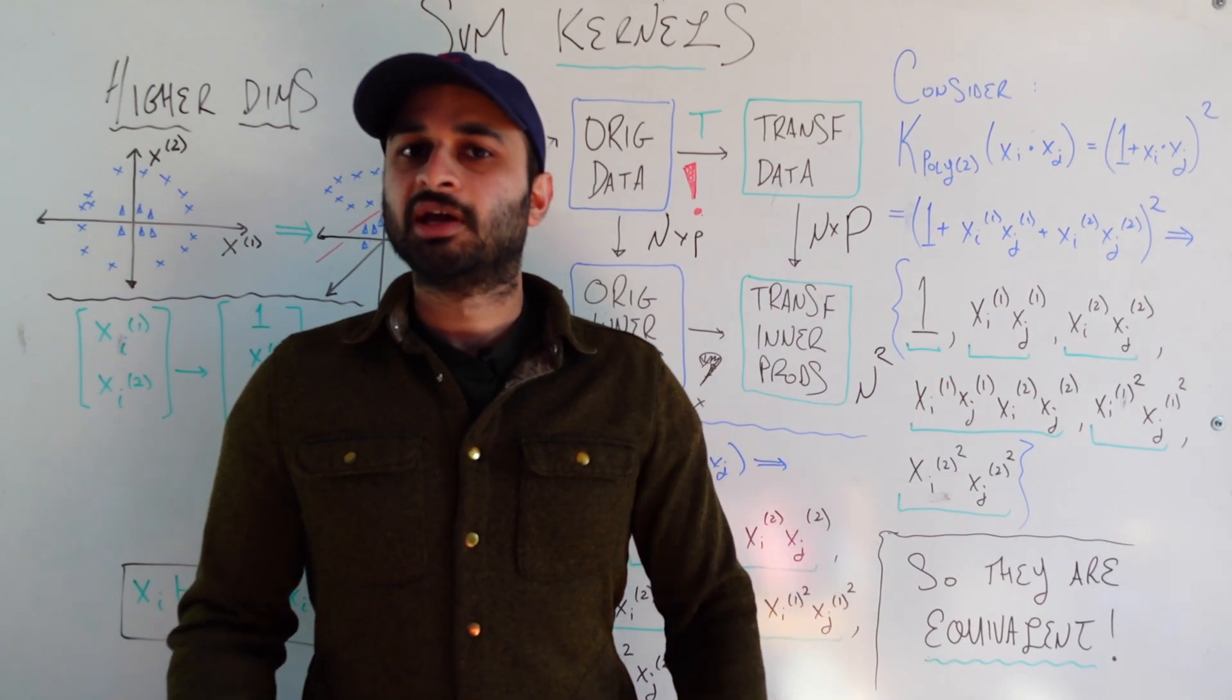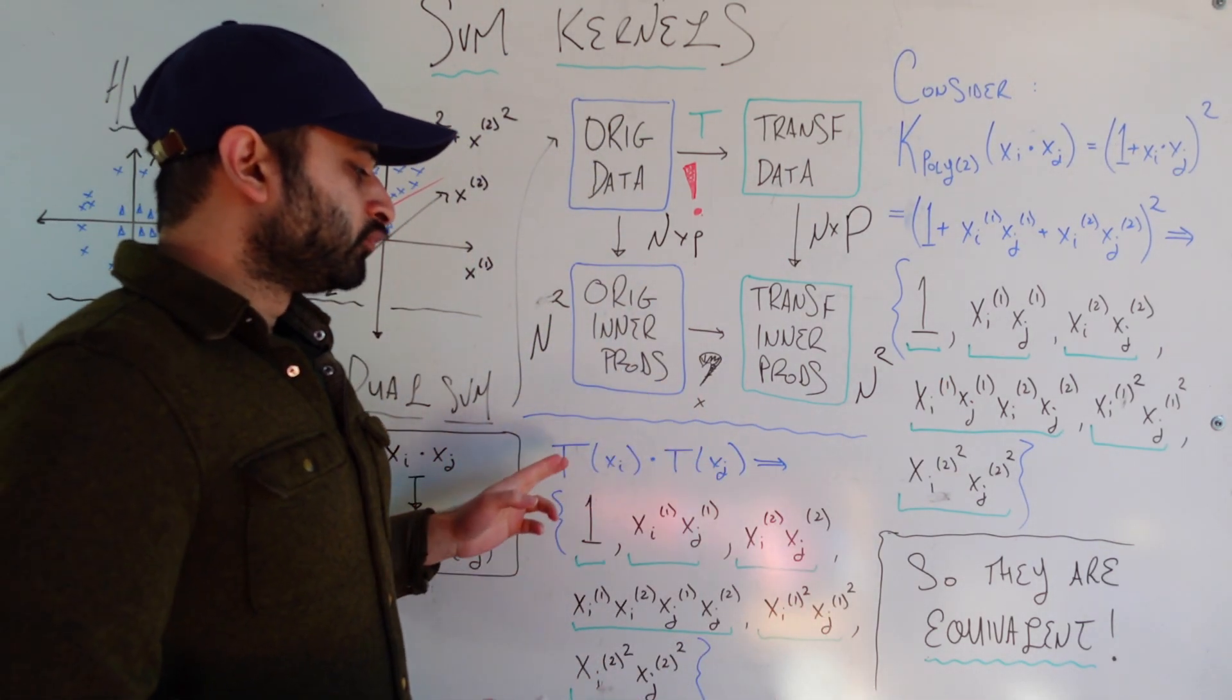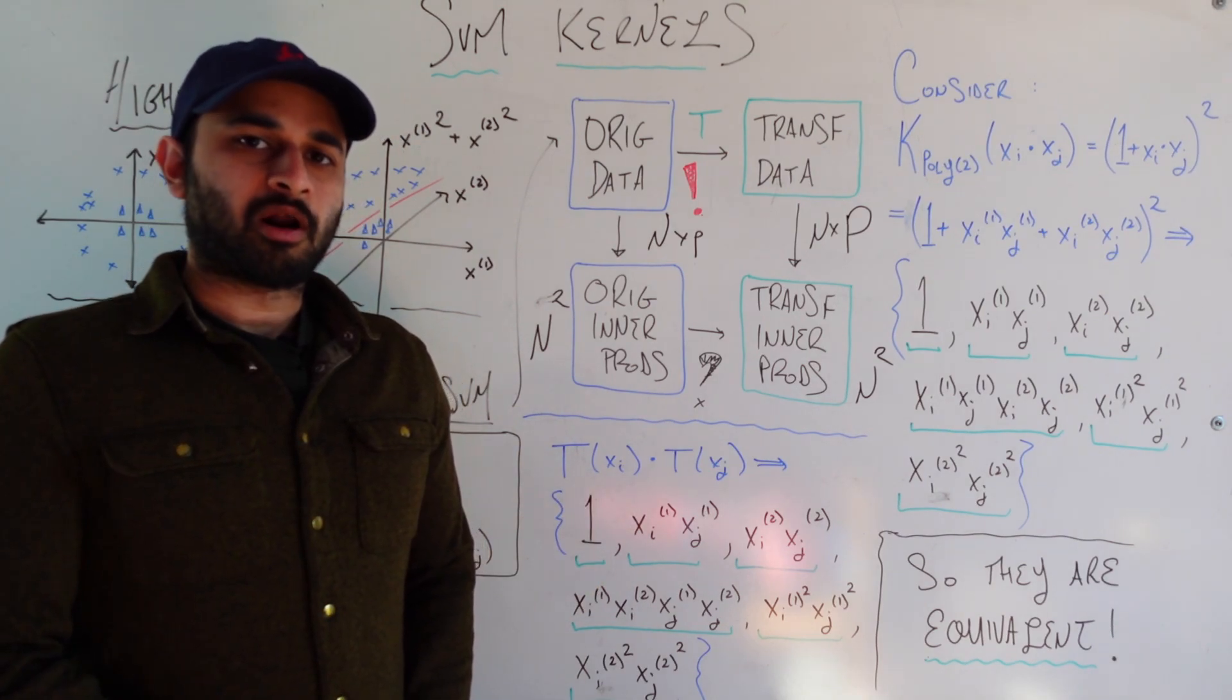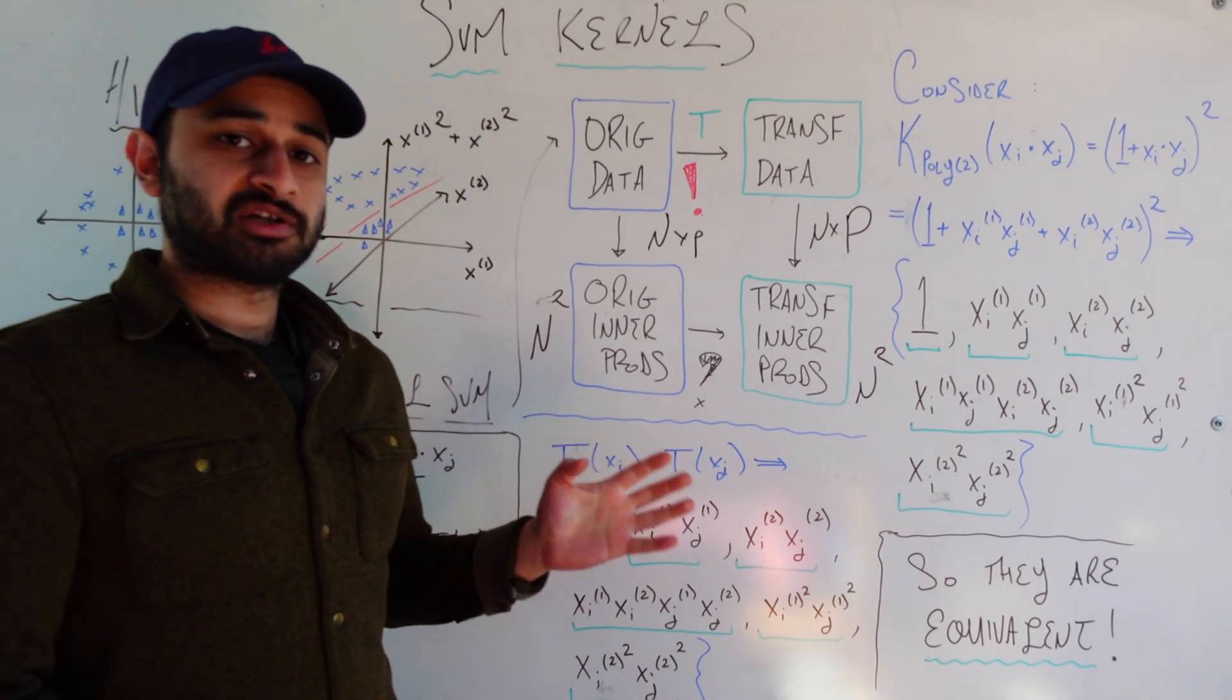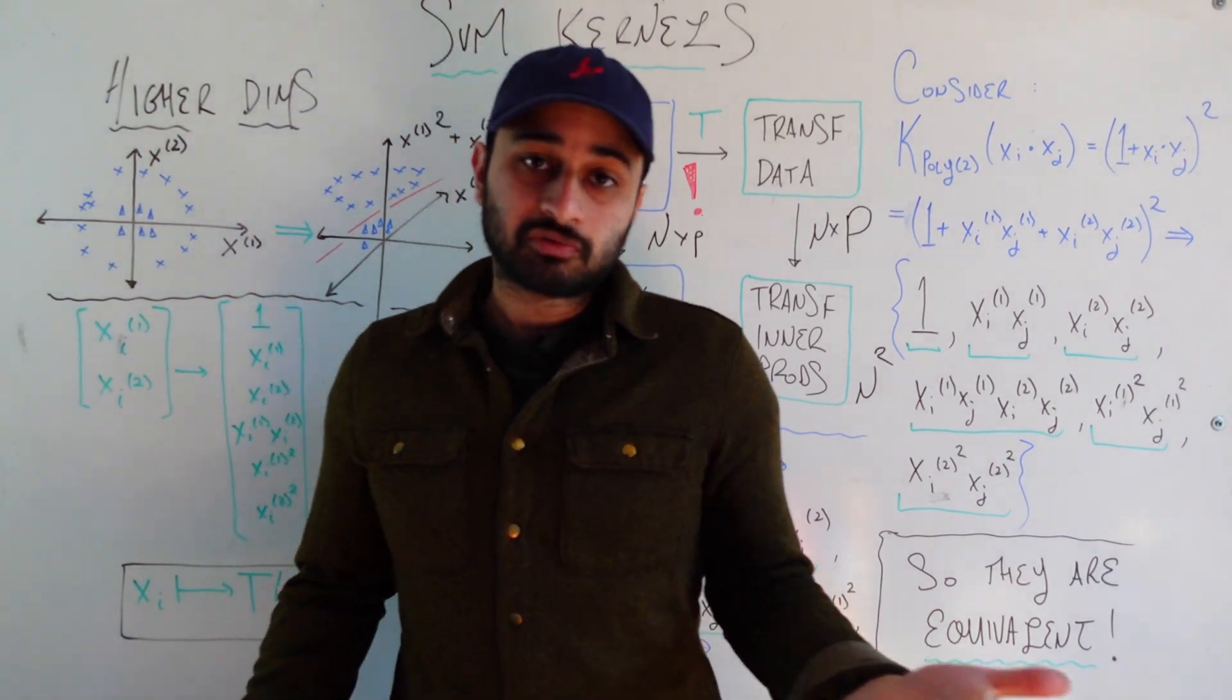But of course, this only works if there is some kind of transformation we can do to get from our original inner products to the transformed inner products. And it doesn't seem clear now, but let's do a little bit of experiments to see if we can get there. So let's start from what we want. We want the transformed inner products, that is we want T of xi dot T of xj. If I were to actually do T of xi dot T of xj, there's only six of them.